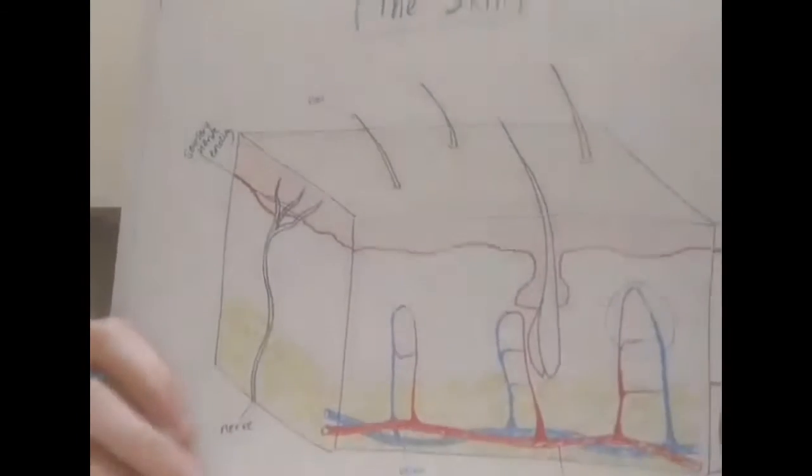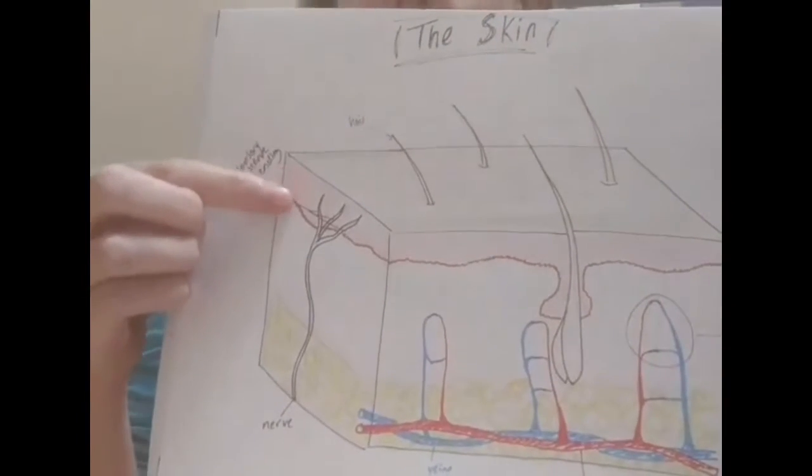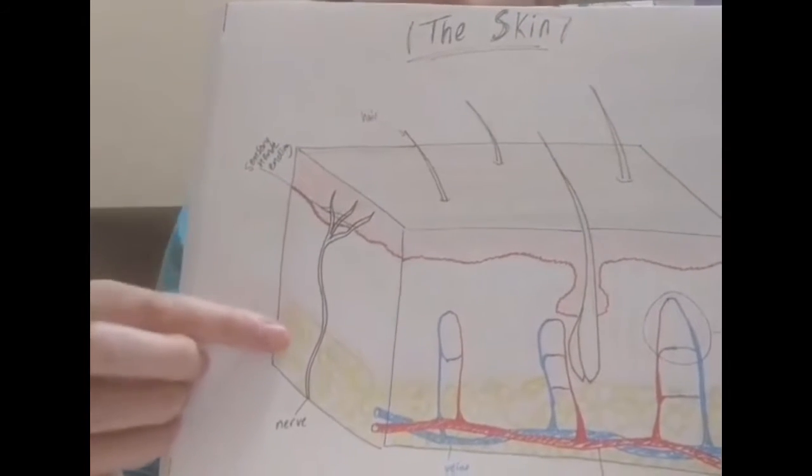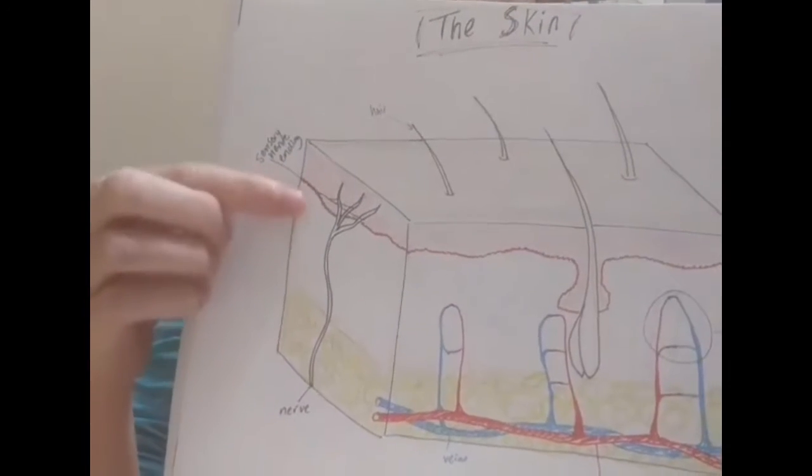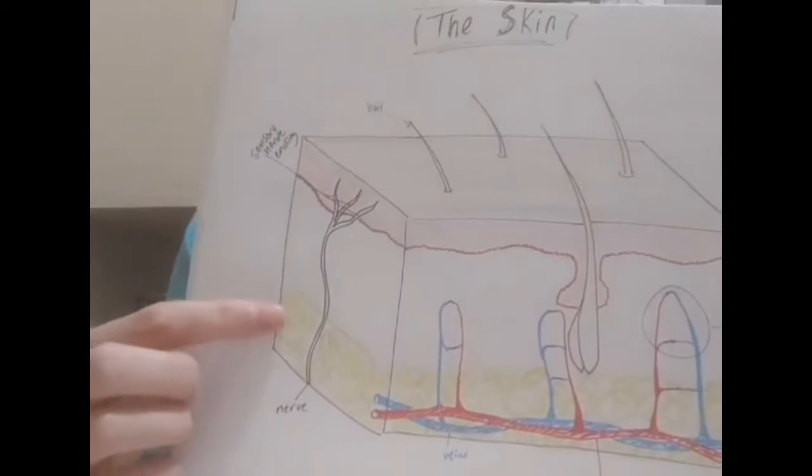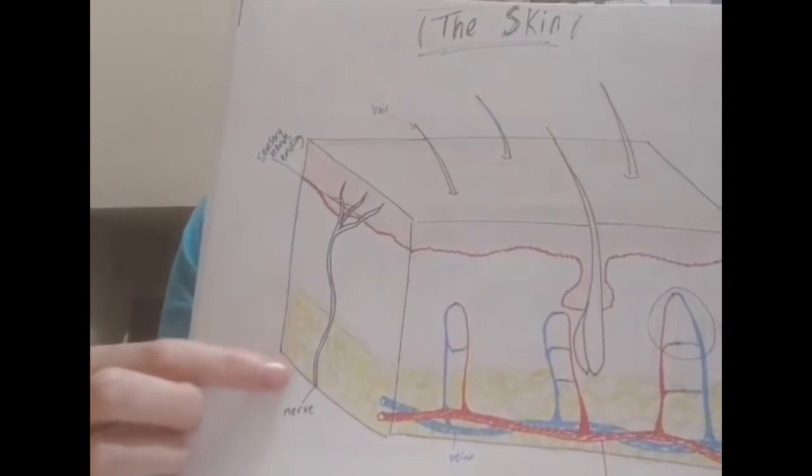So skin is divided into three different layers. The first layer is the epidermis, that top layer. The second layer is the dermis, where all of your little arteries and capillaries are. And the third layer is your subcutaneous tissue, that fatty tissue and the muscles underneath.